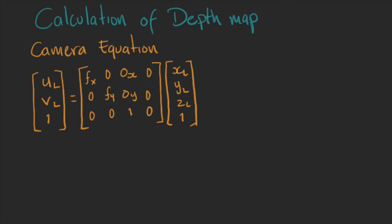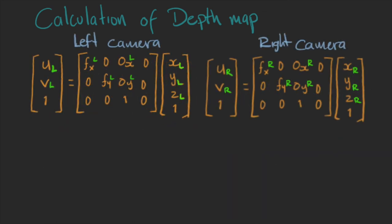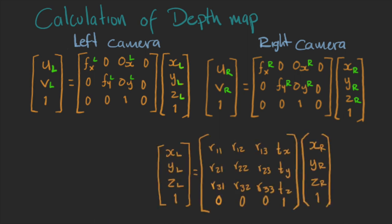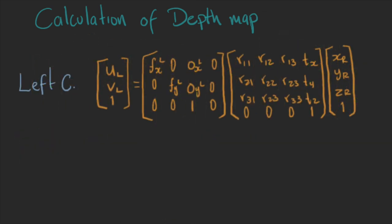The final stage is the computation of the depth map. We can start with the camera equation that we used before. Here, we have the U and V points of the image, the camera parameters, and the world coordinates. And we have the same for the other camera. It doesn't matter which camera you use as the reference point. So, we can exchange this term for the translation and rotation matrix, to obtain the projection from one camera to the other.